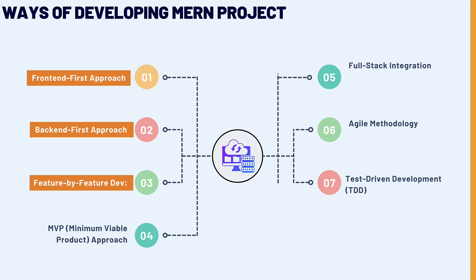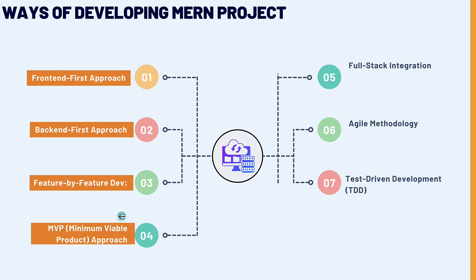Gradually building up the full application, the next approach is MVP — Minimum Viable Product. We develop a basic version of the application with core functionalities, ignoring advanced features and details initially. One advantage is that it allows us to quickly get feedback on the core idea of the application. The next step is to iterate based on feedback, adding more features and refinements over time.